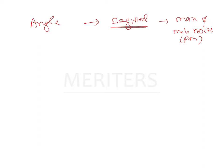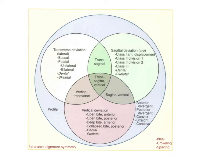Ackermann and Proffitt's classification utilized five major characteristics. The first was intra-arch alignment and symmetry — considering crowding and spacing within an arch. The second was the profile, which addressed the soft tissue component: whether the patient has a convex, concave, or straight profile, whether it's anteriorly or posteriorly divergent.